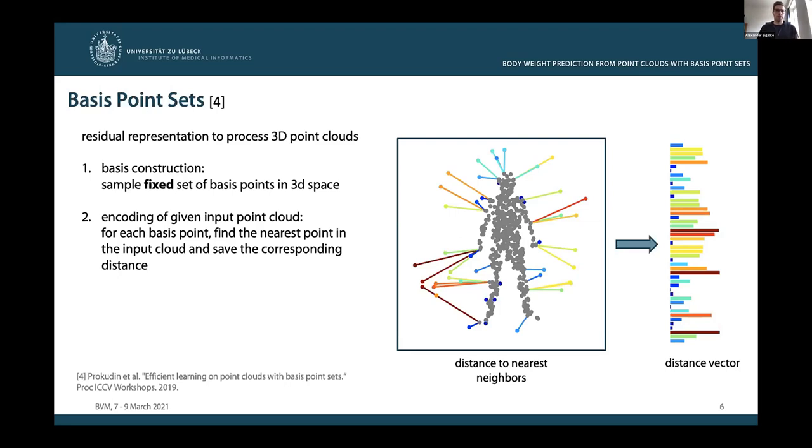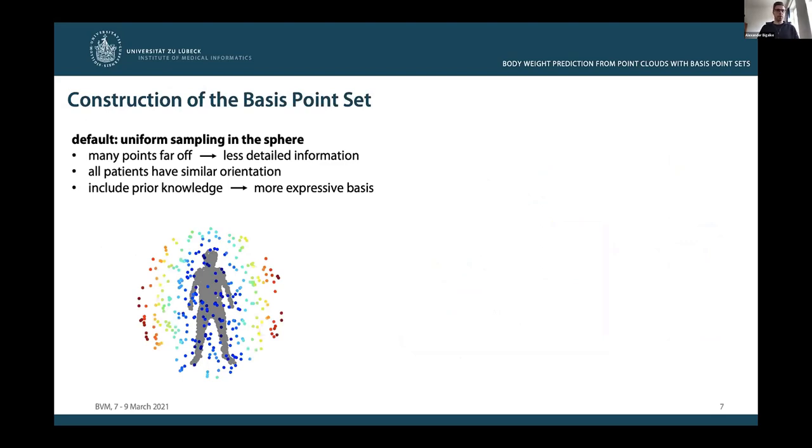When applying this concept of basis point sets to the weight estimation problem, we found that it was of crucial importance how we constructed the basis in step one, that is how we carried out the sampling of basis points. In the default setting proposed by Prokudin et al., the basis points are uniformly sampled in a sphere. This leads to such a set of basis points where many basis points are far away from the input point cloud and thus capture less detailed information about the input.